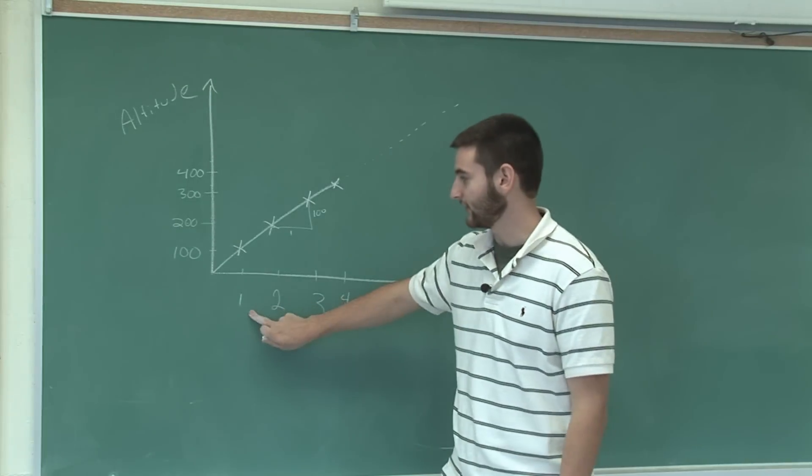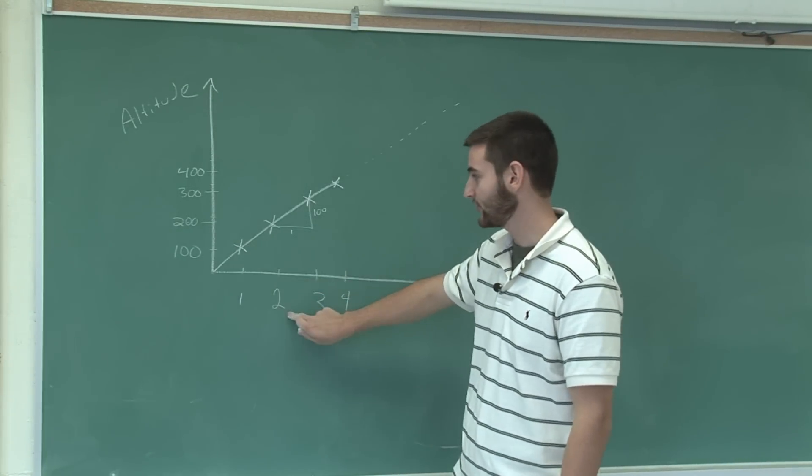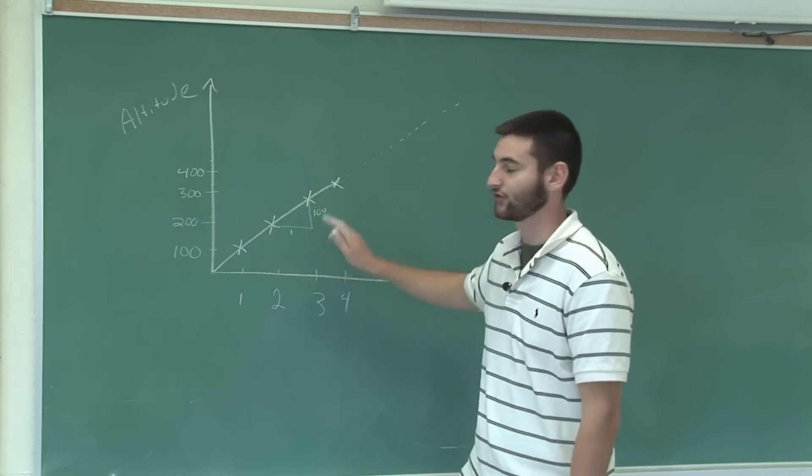So at one second, the rocket is at 100 feet of altitude, two seconds at 200 feet, and so on.